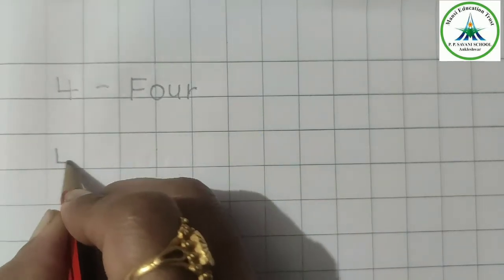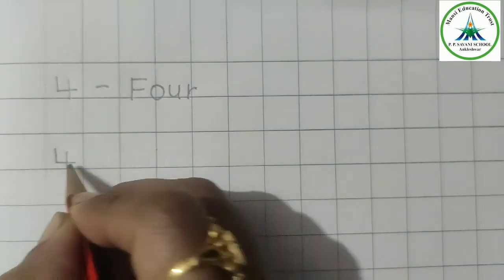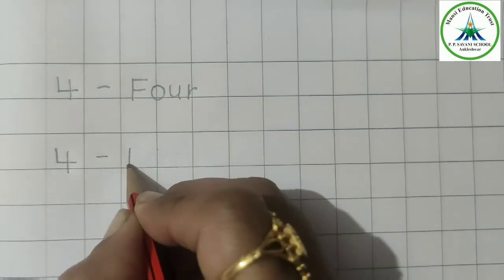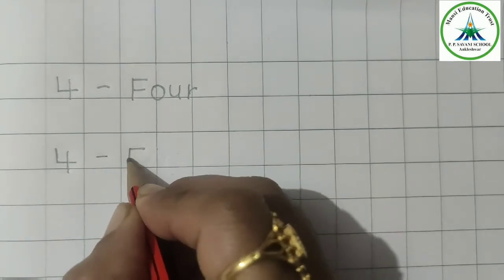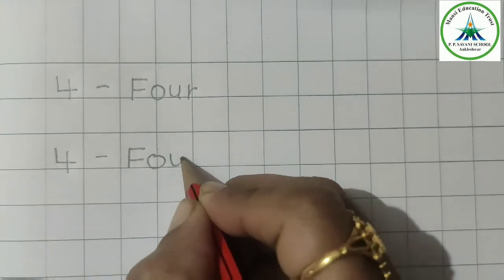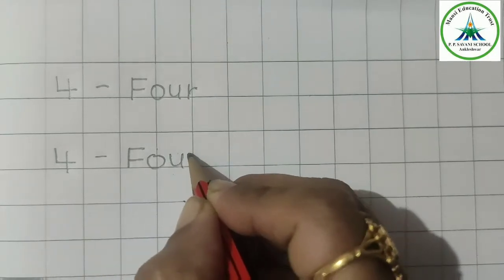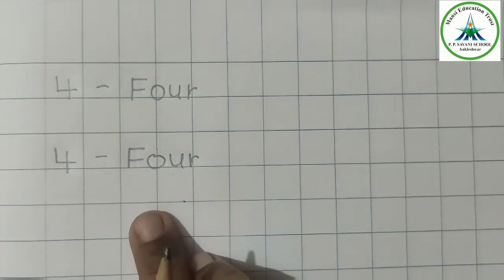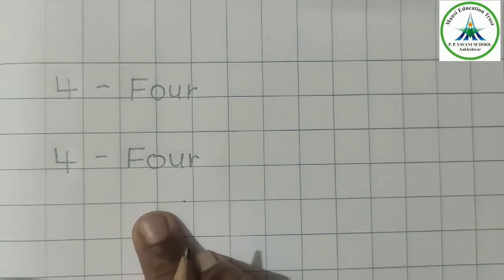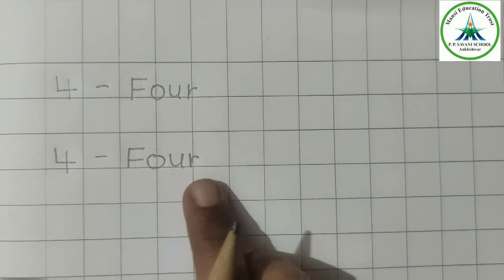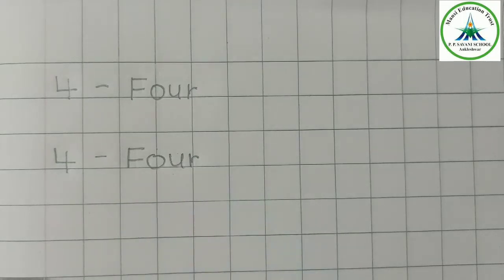Let's see again. This is number 4 and its number name is FOUR. And F-O-U-R is its spelling. Got it? F-O-U-R.